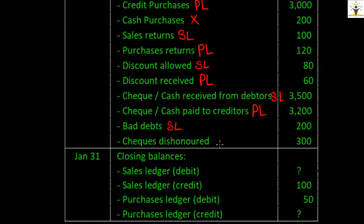Checks received from debtors may be reported as dishonored by the bank. A dishonor entry is recorded in the debtor account in the sales ledger and in the cash book, hence will be recorded in the sales ledger control account. Closing balances of the ledgers will be recorded in the respective ledger control accounts.